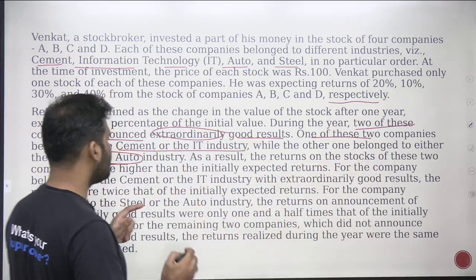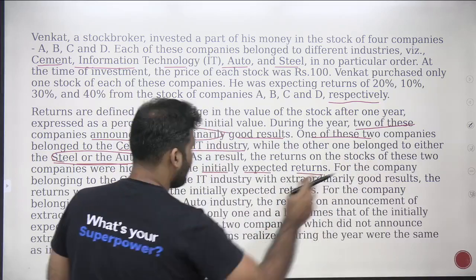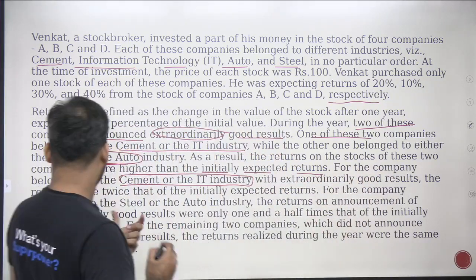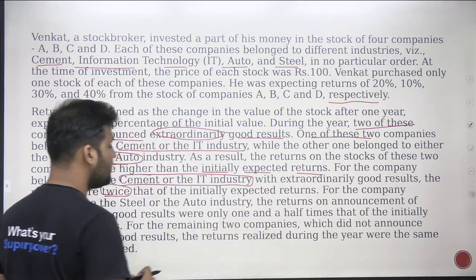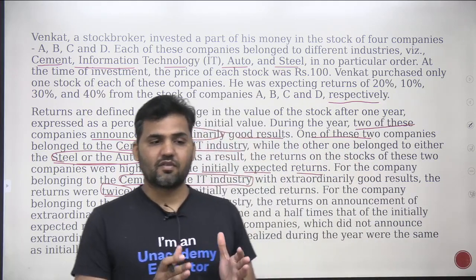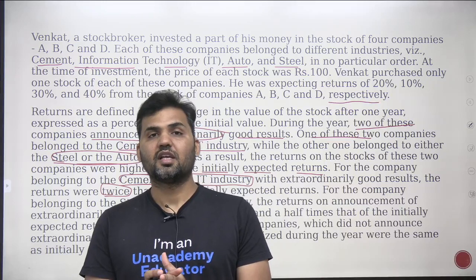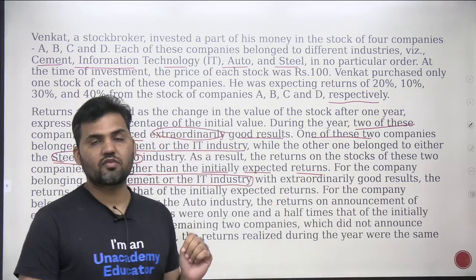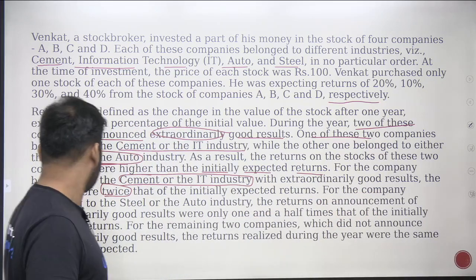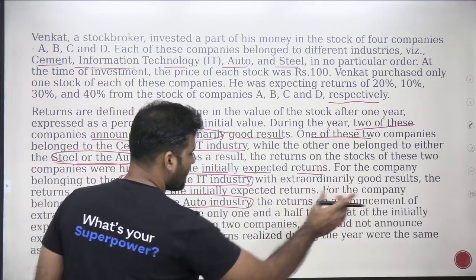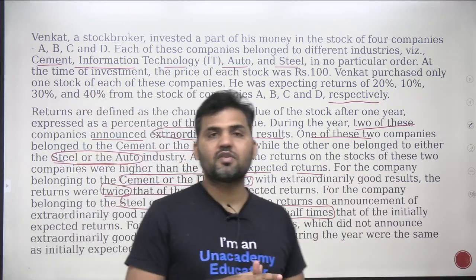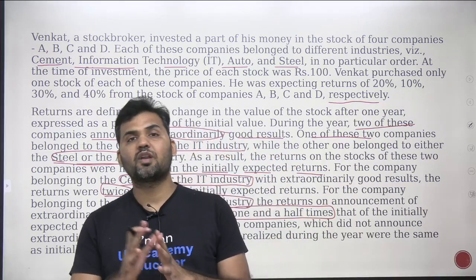As a result, the return of the stocks of these two companies were higher than the initially expected returns. For the company belonging to the C-Mate or IT industry with extraordinarily good results, the returns were twice that of the initially expected return. So whatever was its expected return, now that company is giving you twice the return — if earlier it was giving 20%, now it gives 40%; if 10%, now it gives 20%. For the company belonging to Steel or Auto, the returns were only one and a half times — so if the expected return was 20%, now it gives 30%.